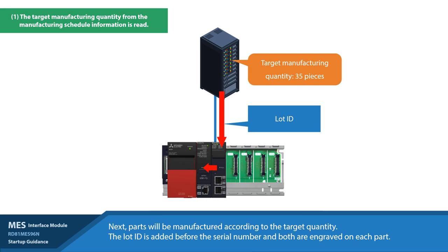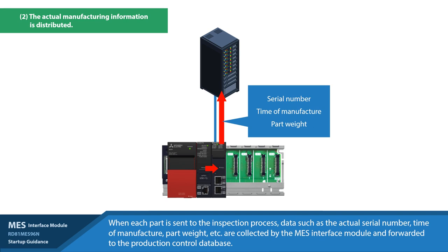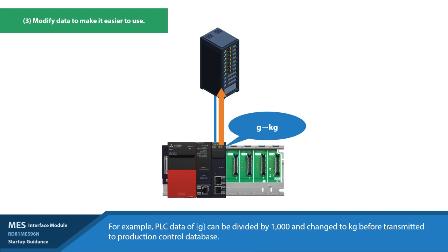In the second part, each part is sent through the inspection process. Data such as the serial numbers, time of manufacture, part weight, etc. are collected by the MES interface module. The last part is the conversion of any needed data from the PLC. The MES interface module has the ability to convert units or apply arithmetic functions as needed. From here, the data can be sent up to the production control database to be used for shipping details, advanced analytics, visualization, and/or real-time reporting.